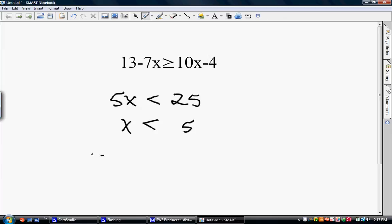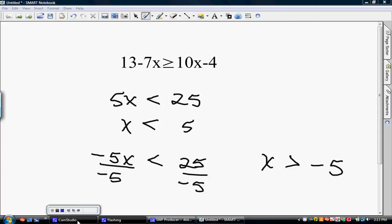But if we had the equation negative 5x is less than 25, and we have to divide by a negative negative 5, then in our final answer, we will reverse the inequality and we will end up with the answer x is greater than negative 5, but only if we have to divide or multiply by a negative.